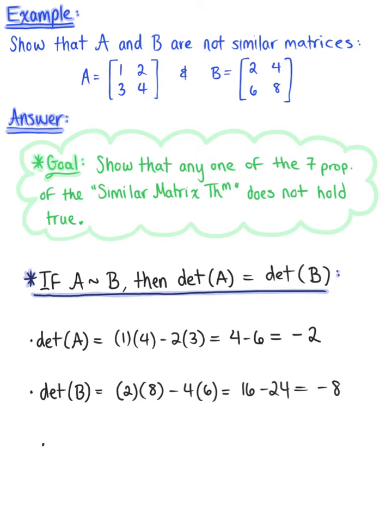So wait a second, we can conclude that therefore the determinant of matrix A does not equal the determinant of matrix B, because negative 2 certainly does not equal negative 8. So this is telling us that matrix A is not similar to matrix B by the similar matrix theorem.